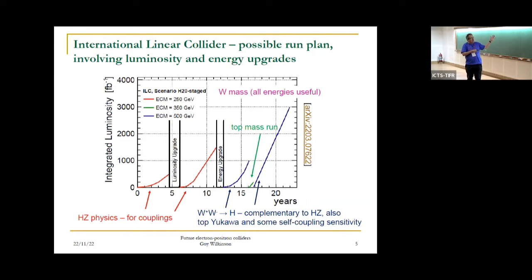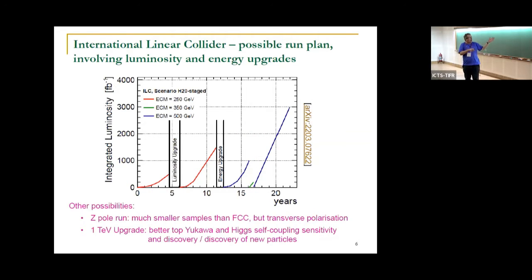Operating this machine over several years, you would start at 250 GeV accumulating HZ data for Higgs couplings. You would upgrade the luminosity to increase data samples, then upgrade the energy by making the machine longer to 500 GeV where you produce Higgs from WW fusion. You would make a dedicated run to study the top mass. If you wish, you could do a run at the Z pole or raise the energy still higher to a TeV or so.